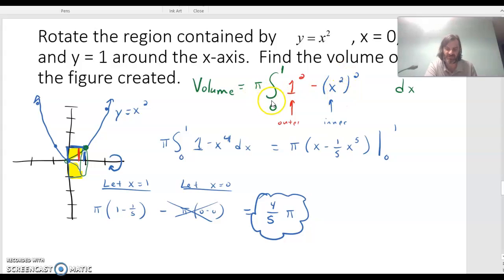So I have pi and then the integral from 0 to 1 of 1 squared, that's my outer radius, minus x squared squared, that's my inner radius, dx.